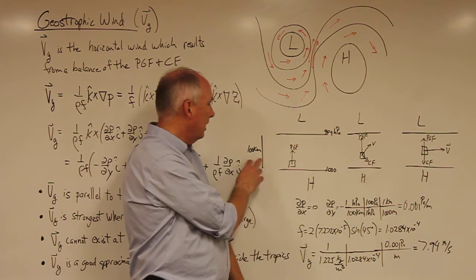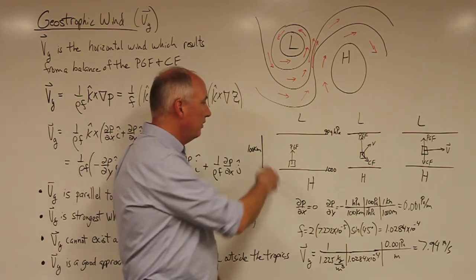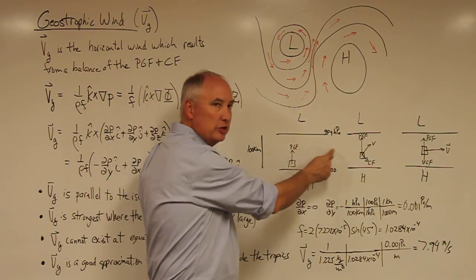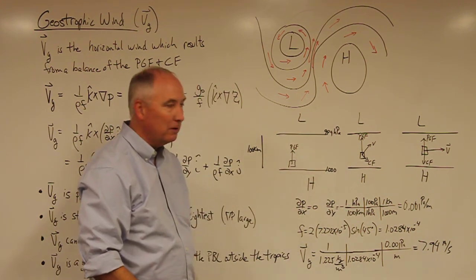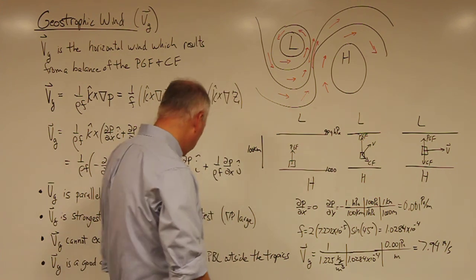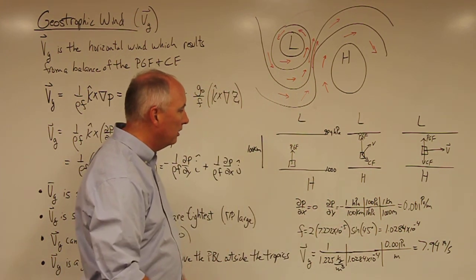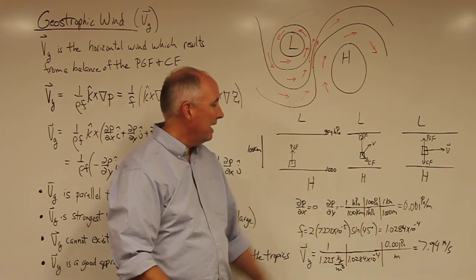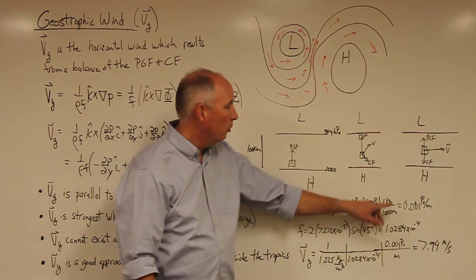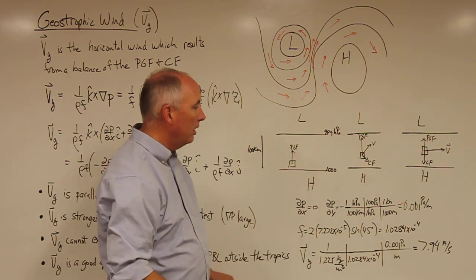For a specific example, say there are 100 kilometers between two isobars, allowing us to calculate the pressure gradient. With north, east, south, and west defined, partial p over partial x is zero since there is no pressure change in the i-hat direction. Partial p over partial y is a decrease of 1 hPa per 100 km. Converting: 1 hPa = 100 Pa and 100 km = 100,000 m, giving a pressure gradient of minus 0.001 pascals per meter.